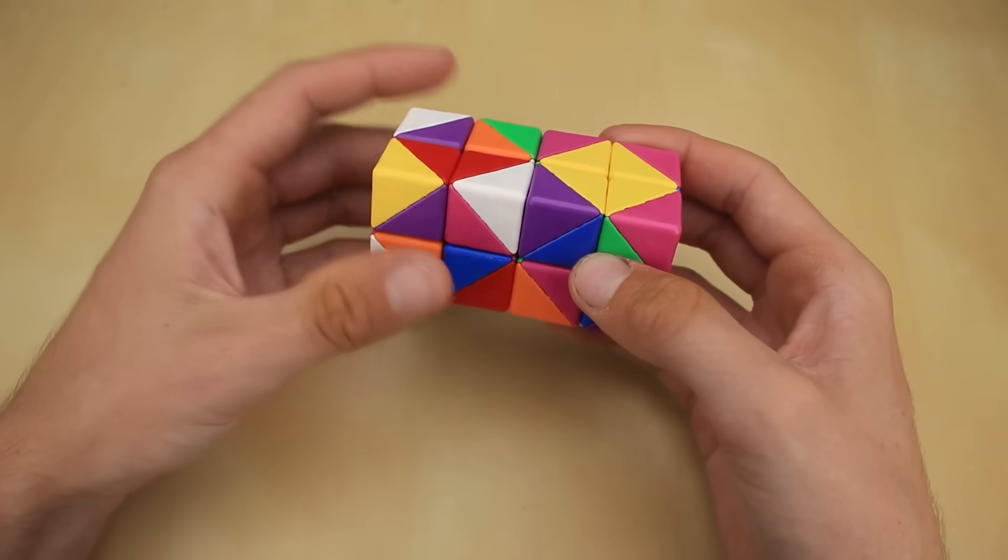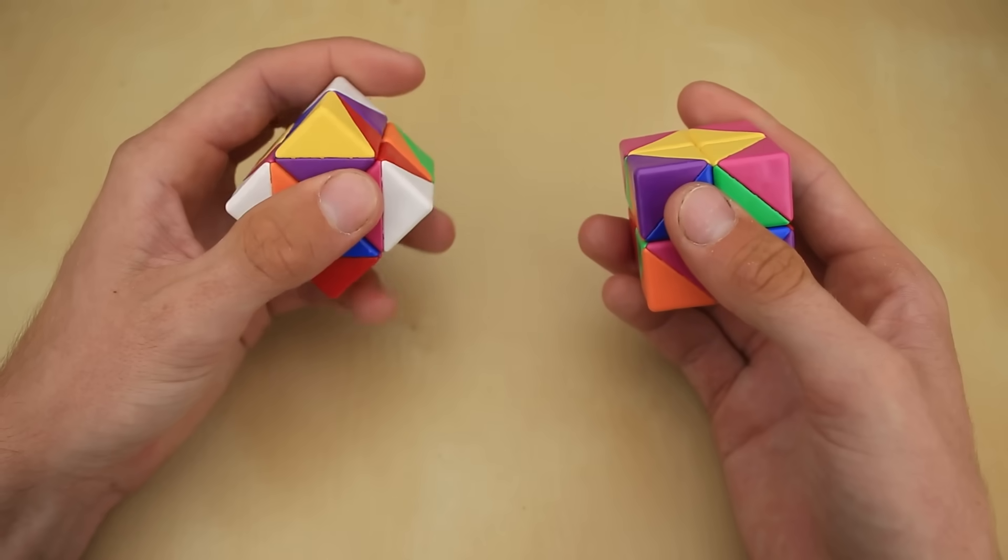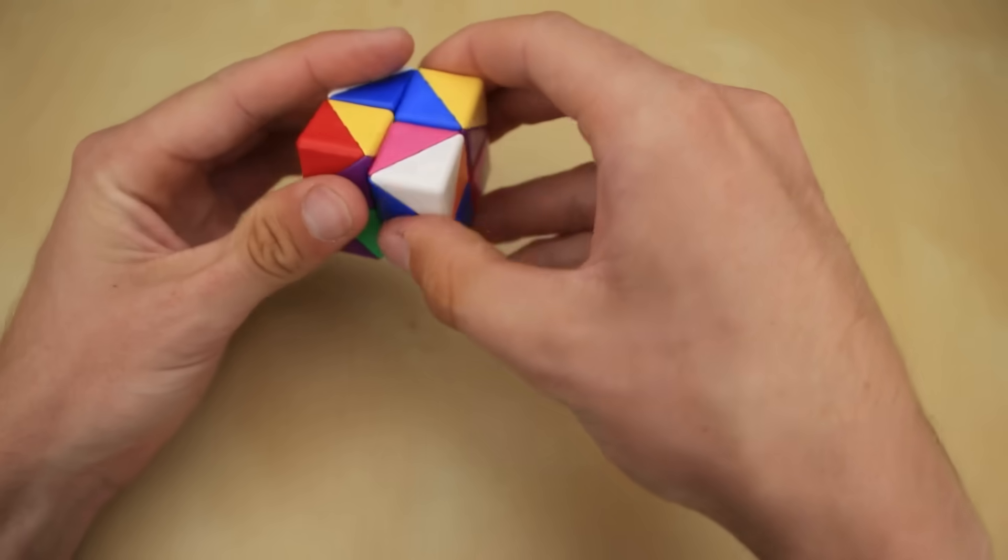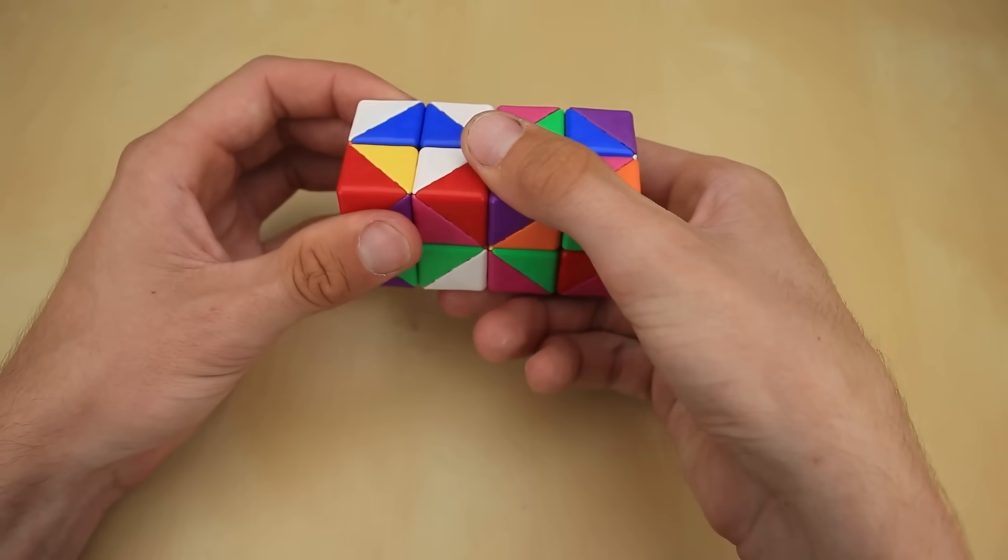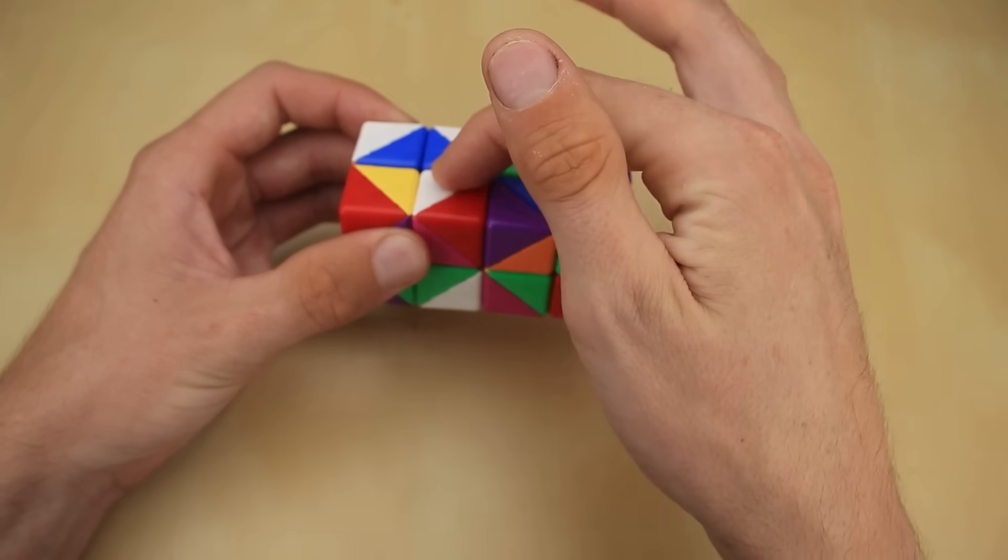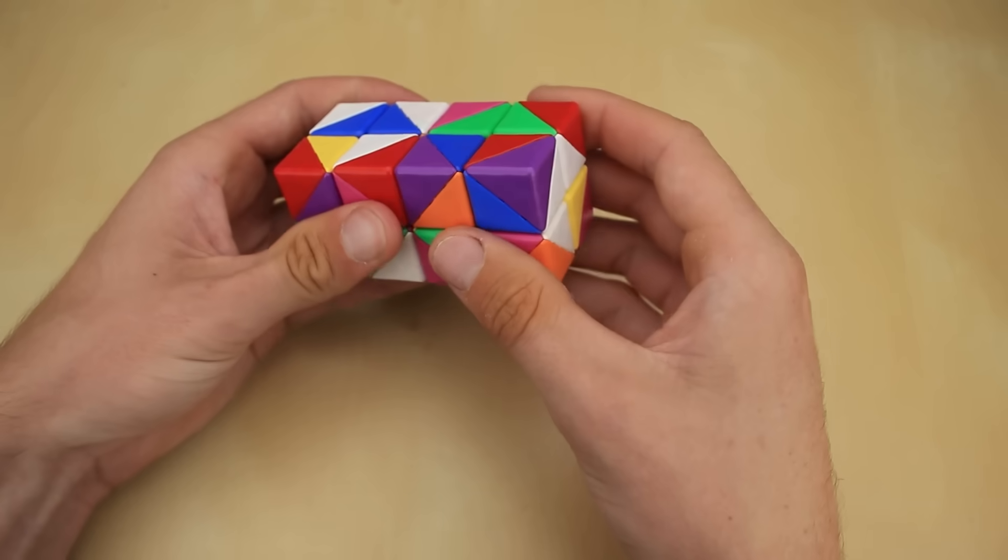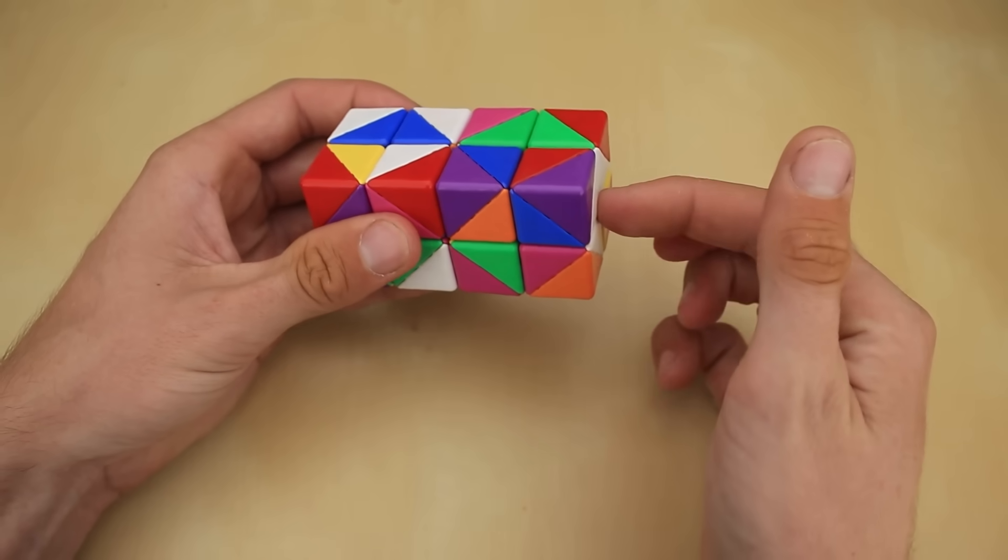Where basically we just start turning this left side as if it were a 2x2, but since that's not legal, anytime we want to do a turn on this side, on this mini 2x2, we just do the opposite turn on this side, and that doesn't mess up anything that we have over here.